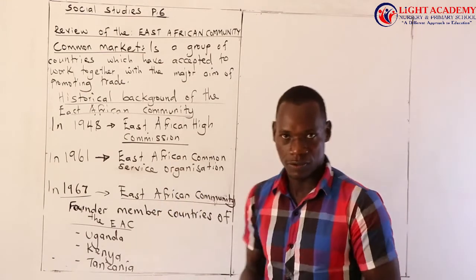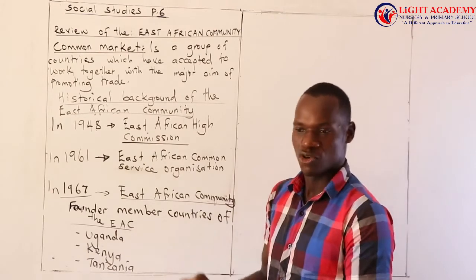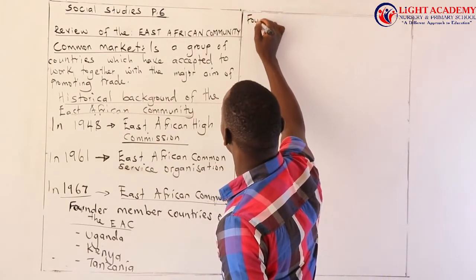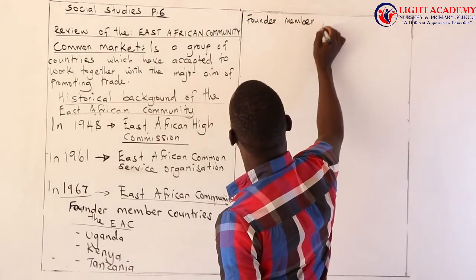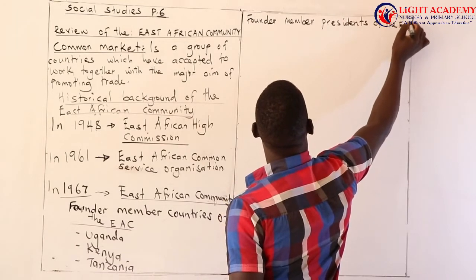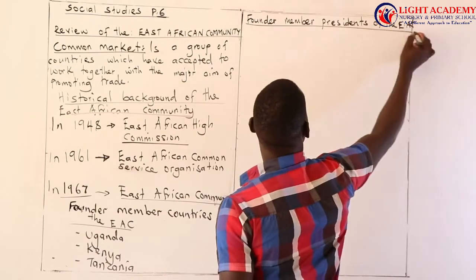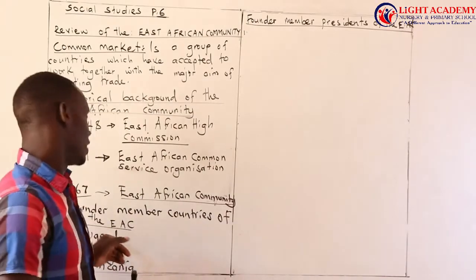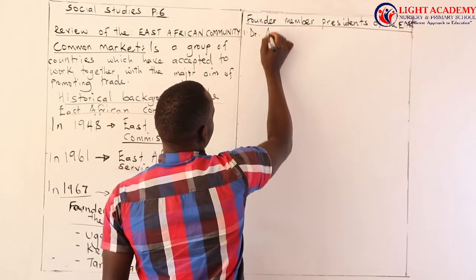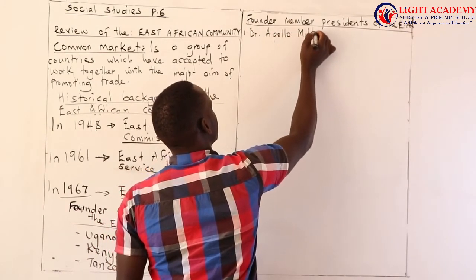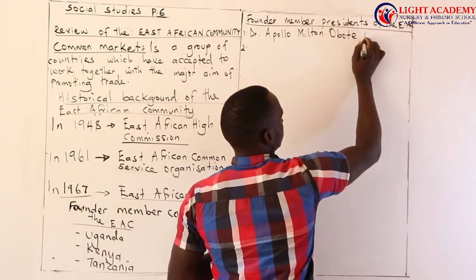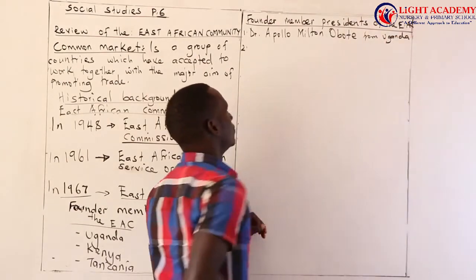Let's also remind ourselves of the founder member presidents of the East African Community — the personalities who founded the East African Community. Number one, we start with Uganda. Who was the founder member president of the East African Community from Uganda? This was Dr. Apollo Milton Obote, from Uganda.